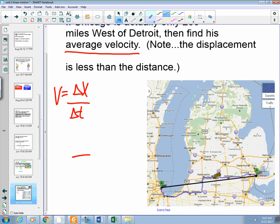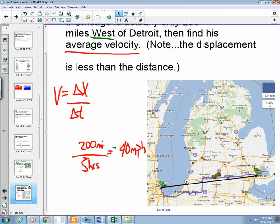But, our displacement is now 200 miles. So, when we go through and calculate that out, our velocity is only 40 miles per hour. However, velocity includes direction. And, since we are west of Detroit and not east of Detroit, that is a negative 40 miles per hour.